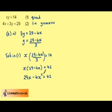For a quadratic we want everything onto one side, so we get 4x squared minus 29x plus 42 equals 0.